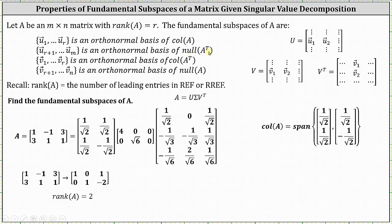Now let's find the null space of A transpose. Remember, R is equal to two, so the first vector would be U sub three, but notice matrix U only has two columns, not three columns. This indicates the zero vector is an orthonormal basis for the null space of A transpose, or we can say the null space of A transpose is equal to the span of the set containing the zero vector, which would just give us a zero vector in R2. In the case where the column in matrix U or the row in matrix V transpose does not exist, the result would be the zero vector.